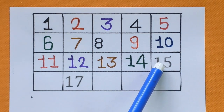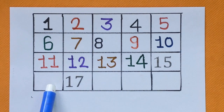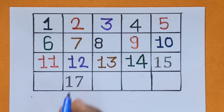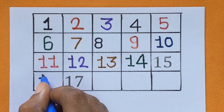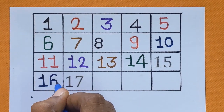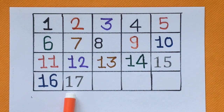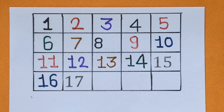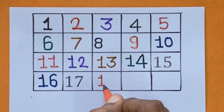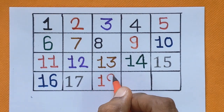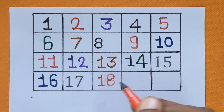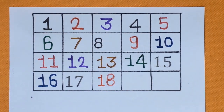And after number 15, which number comes? It's number 16. 1, 6 — 16. Here is 1, 7 — 17. After number 17, the next number is number 18. 1, 8 — 18.